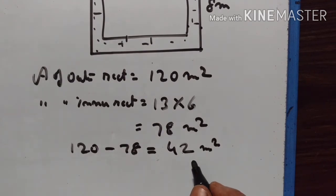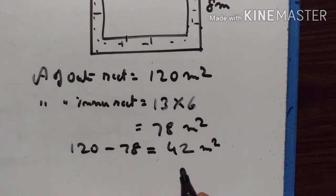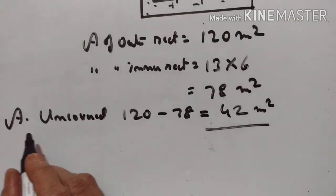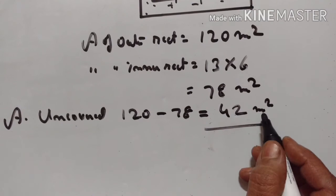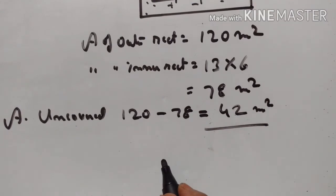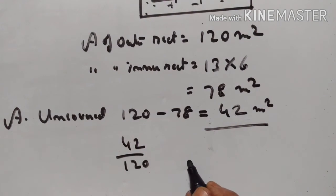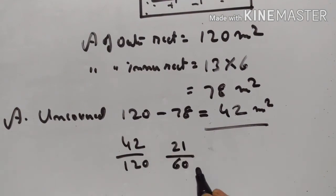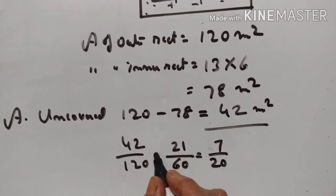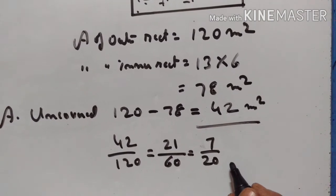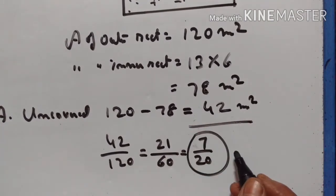So what is the fraction of the floor that is uncovered? The fraction is 42 upon 120, which simplifies to 21 upon 60, and further to 7 upon 20. So 7 upon 20 is the fraction of the floor that is left uncovered.